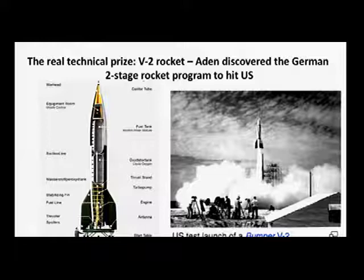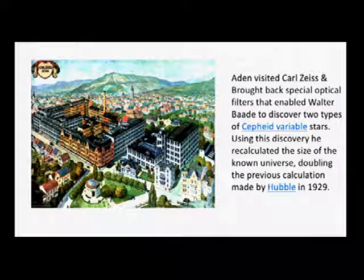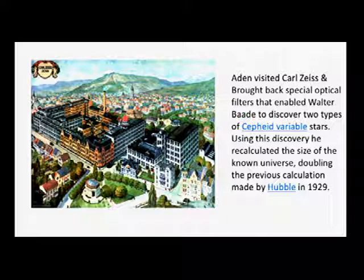One interesting technical prize that Aidan discovered was that the German two-stage rocket program to hit the U.S. was under development, probably about six months away — they were going to put the V-2 on top of a larger rocket and in two stages launch it to bomb the east coast of the United States. During his visit to Germany, Aidan visited Carl Zeiss. He brought back some special optical filters that enabled Walter Baade to discover two types of Cepheid variable stars; using his discovery, Baade calculated the size of the universe and essentially doubled it.